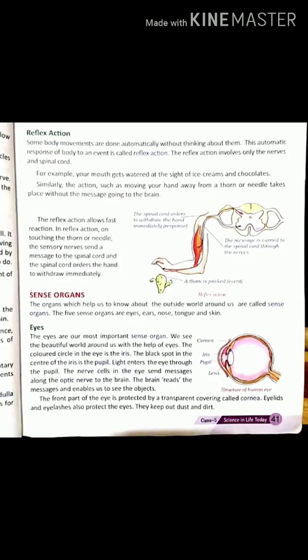In this video we will discuss reflex action and sense organs. First, reflex action. As you can see in the diagram, it shows reflex action. Some body movements are done automatically without thinking about them. This automatic response of the body to an event is called reflex action. Some activities are not controlled by the brain; such activities are controlled by the spinal cord. Reflex action involves only the nerves and the spinal cord.